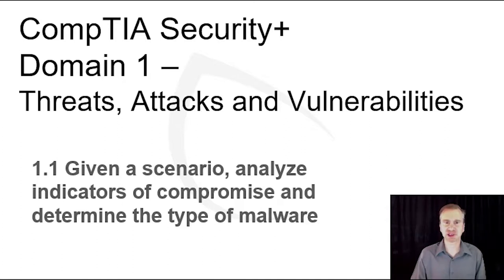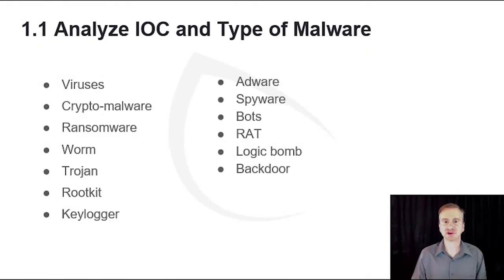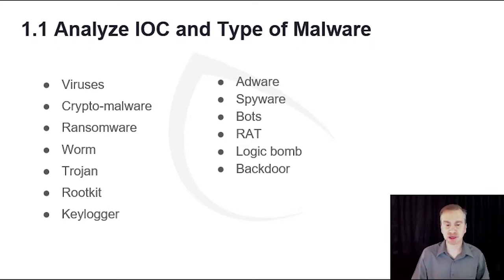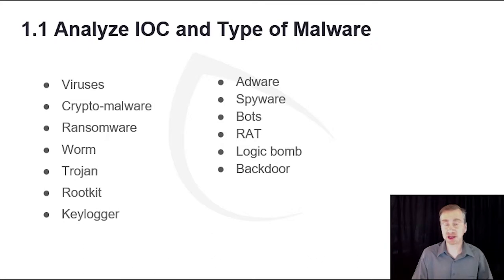This is the first section in domain 1 on threats, attacks, and vulnerabilities. IOC are indicators of compromise — these are indications that your system may have been breached or there may be some type of a security event. Malware, or malicious software, is a serious problem in today's computing environment. Malware is software designed to harm a user's computer or data, or to steal their information.